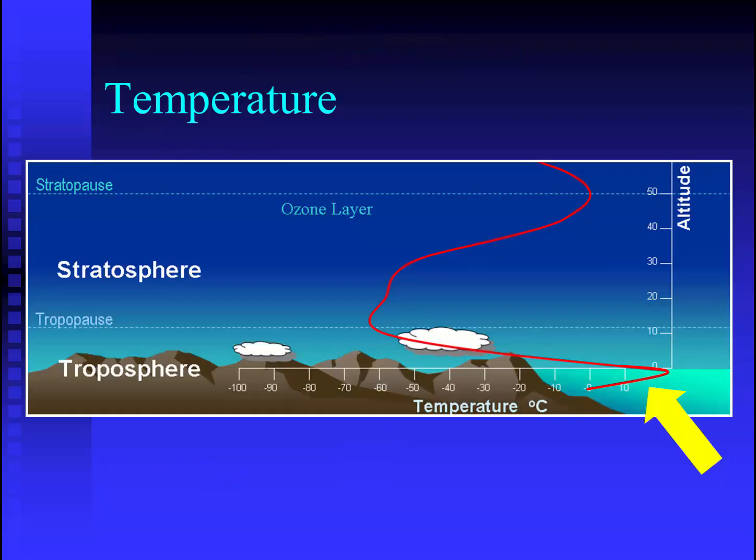For the rest of this class, we'll focus on what happens in the troposphere. Most of the time in the troposphere, temperature decreases with altitude. Although on rare occasions, we can see a strange hook at the bottom of this graph, as indicated by the yellow arrow. This is what we call a temperature inversion.